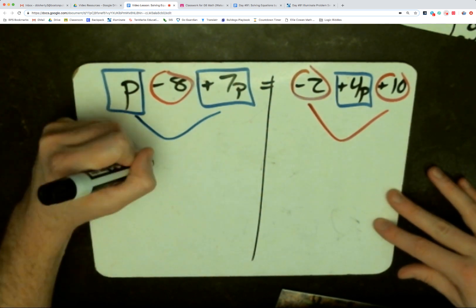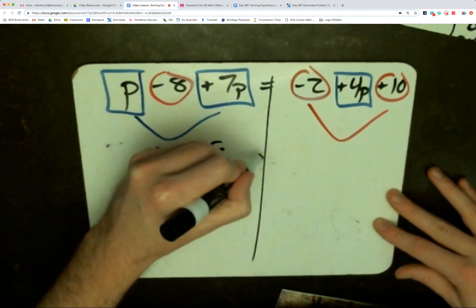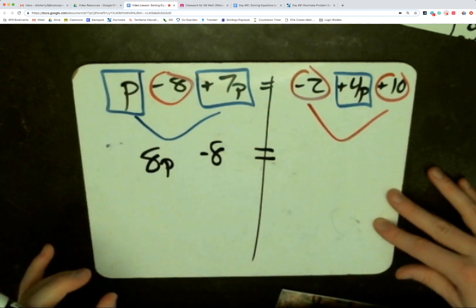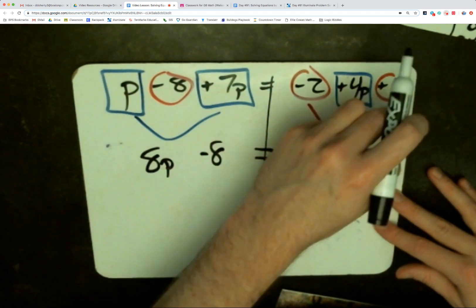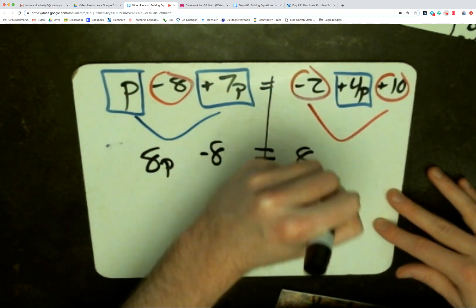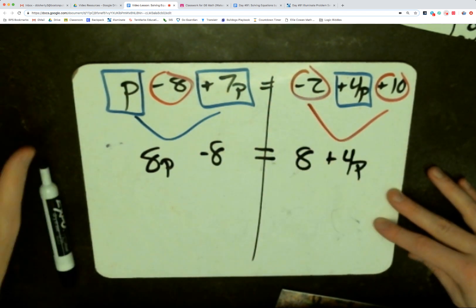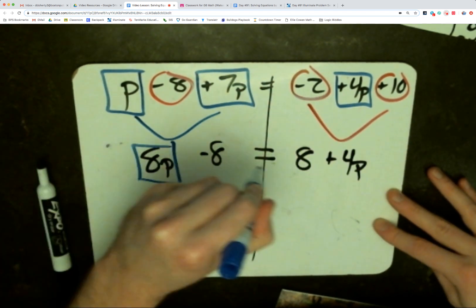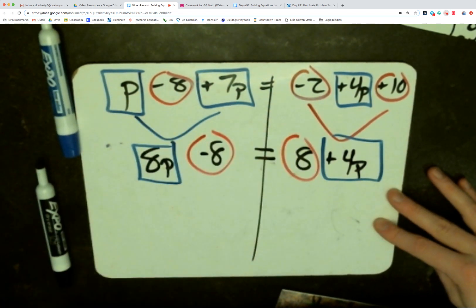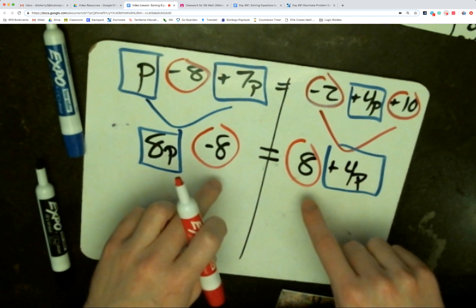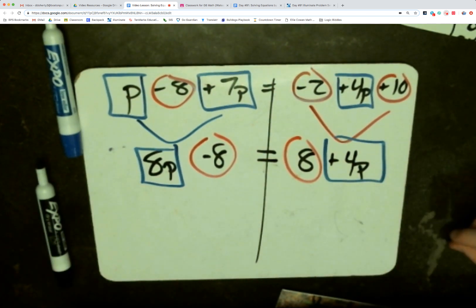p plus 7p gives us 8p. We still have the negative 8. That equal sign lives on the river. It splits our left and our right sides, keeps them separate. Negative 2 combines with positive 10. That's the same thing as 10 minus 2, which gives us 8. So we have 8 plus 4p. By simplifying, now we're down to just two variable terms and two constant terms. But they're not gathered yet. Constants on different sides, variables on different sides. Inverse operations are going to help us start to gather those.